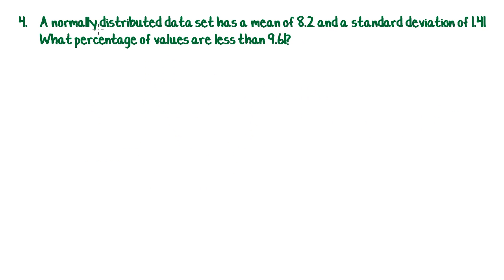Question 4. A normally distributed data set has a mean of 8.2 and a standard deviation of 1.41. What percentage of values are less than 9.61? So it's normally distributed, so I can use this rule and I'll draw myself a bit of a bell curve with a mean in the middle at 8.2.